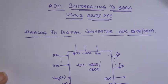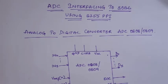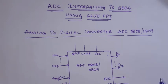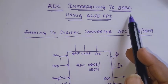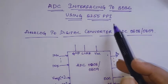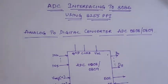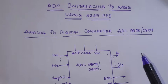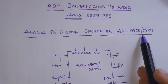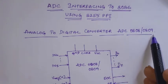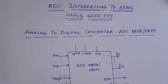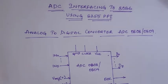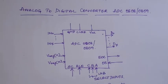Hello students. Let's continue with interfacing using the 8255 PPI. We will discuss ADC interfacing to 8086 using 8255 PPI. This is analog to digital converter — specifically the ADC 0808 or 0809. There are many ADC chips available and depending on the application we select one. Here let's discuss the 0809, which is a multi-channel ADC.